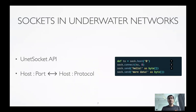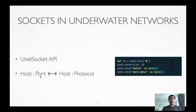You can translate this exact concept into underwater networks. UnetStack, which we'll be using for this tutorial, actually has a socket API called the UnetSocket API. It's very similar to a Python-style socket API. The only difference is that unlike IP networks where you have a host and a port, UnetStack's socket API uses a host and a protocol. Protocol is also a number, but whereas IP ports go from 0 to 65535, UnetStack protocol goes from 0 to 32.